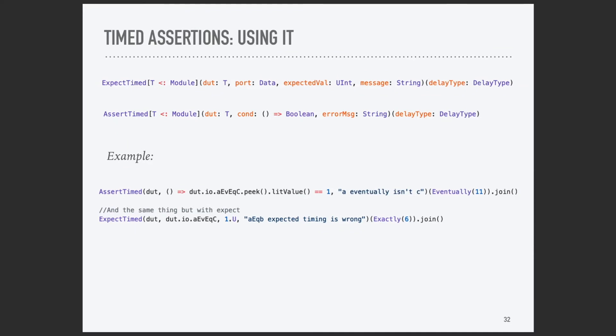Here's what it looks like if we tried to do the same assertion using either expect or assert, but this time with the added timing delay. Here we're checking if a value is one at some point in x cycles, or at some point in the next 11 cycles. As you can see, very lightweight text, not too hard to use. The difference between expect and assert is just syntactic sugar. We can use either one. It doesn't really change anything.